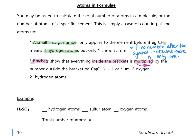The second rule is brackets. Brackets mean everything inside is multiplied by the number outside — this is really important. For calcium hydroxide Ca(OH)₂: calcium has no number so there's one; oxygen is one inside the bracket multiplied by two, giving two oxygens; hydrogen is one inside the bracket multiplied by two, giving two hydrogens. So we have one calcium, two oxygens, and two hydrogens.